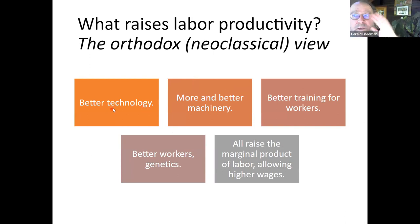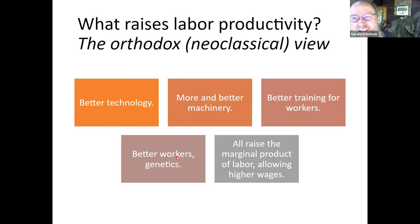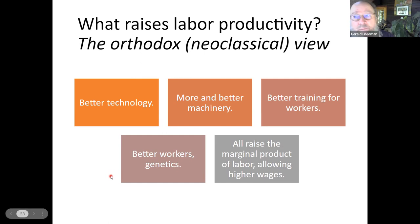The traditional conservatives — the Bush/Reagan variety — want more and better machinery. The far right, as you start getting to the Trumpian approach, says better workers come from genetics or maybe better families — encourage people to marry, don't let them have premarital sex, punish them if they do.